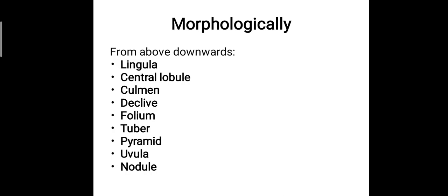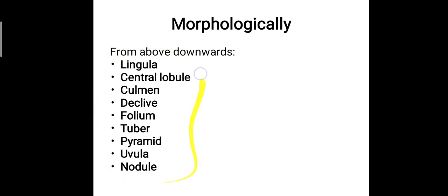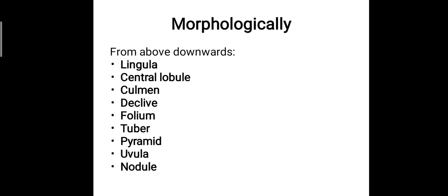Morphologically, the cerebellum is also composed of smaller lobules. They are the lingula, central lobule, culmen, declive, folium, tuber, pyramid, uvula, and the nodule. These names can be remembered by using mnemonics — it is as per your choice. You can make mnemonics and connect them together to remember the names very easily.